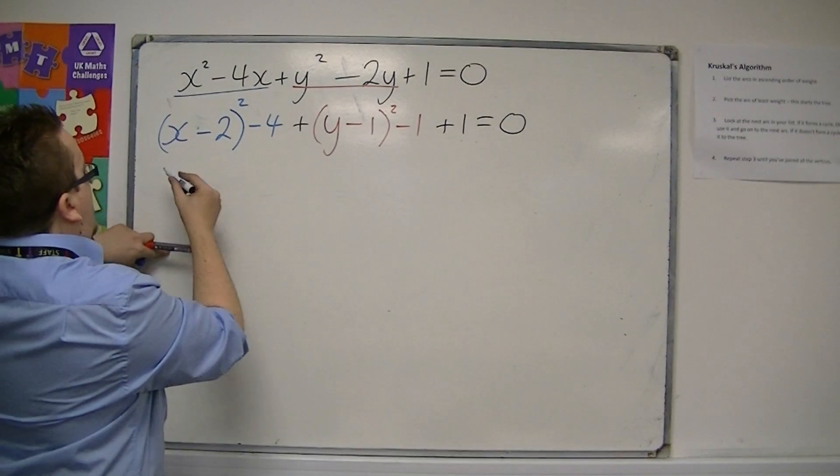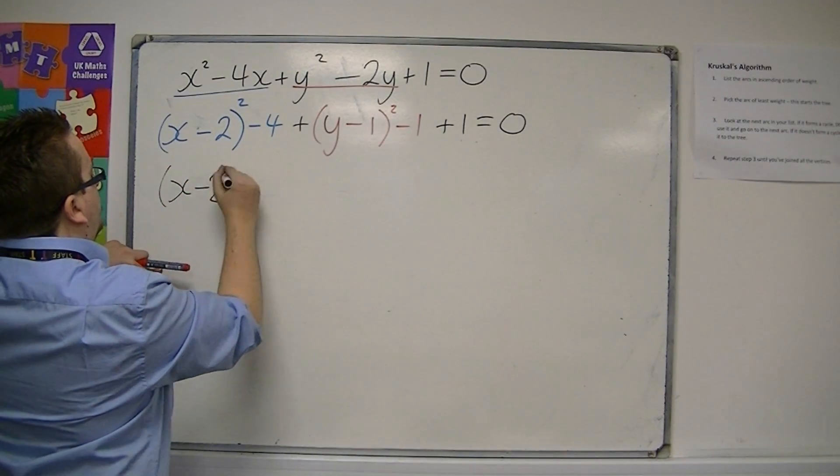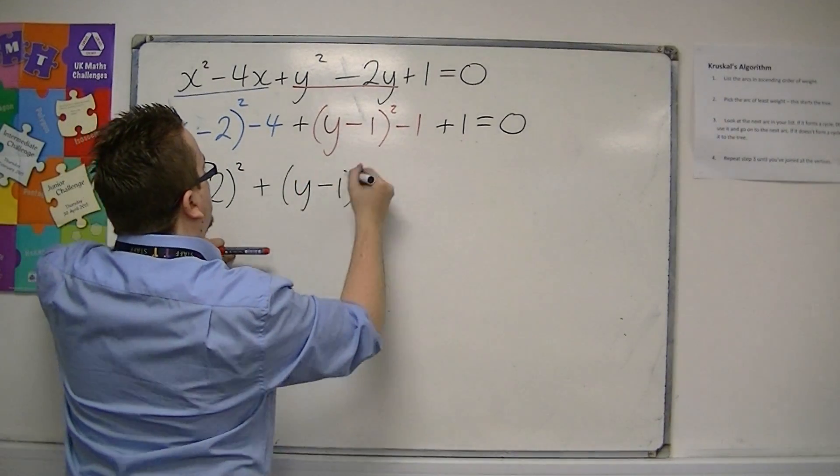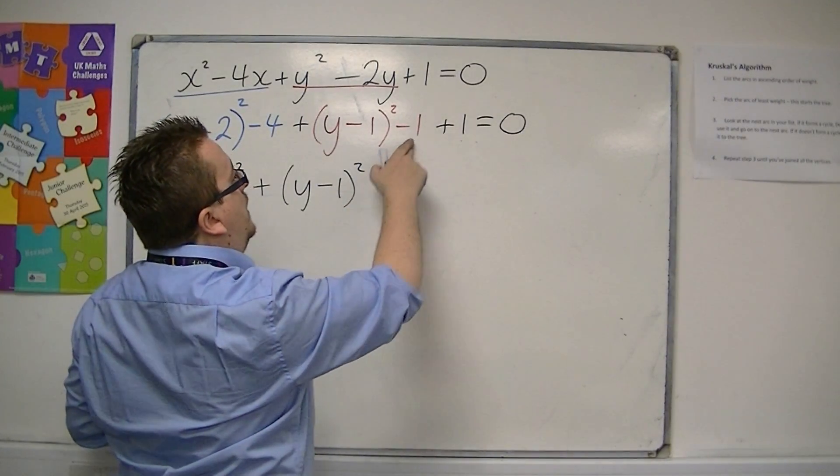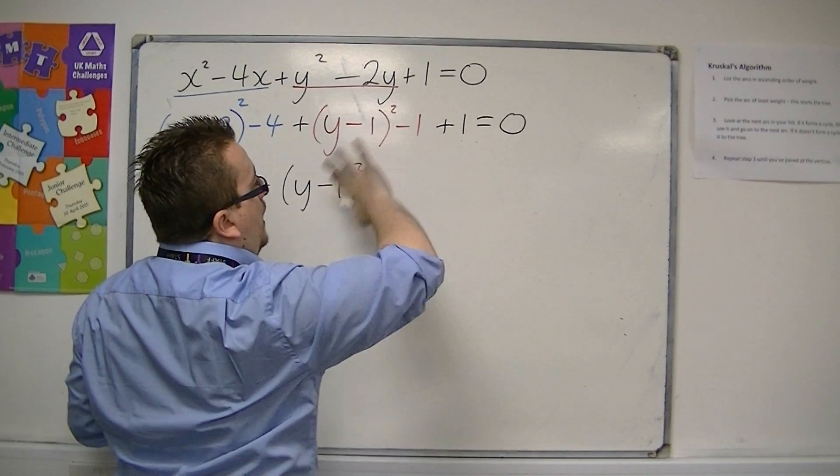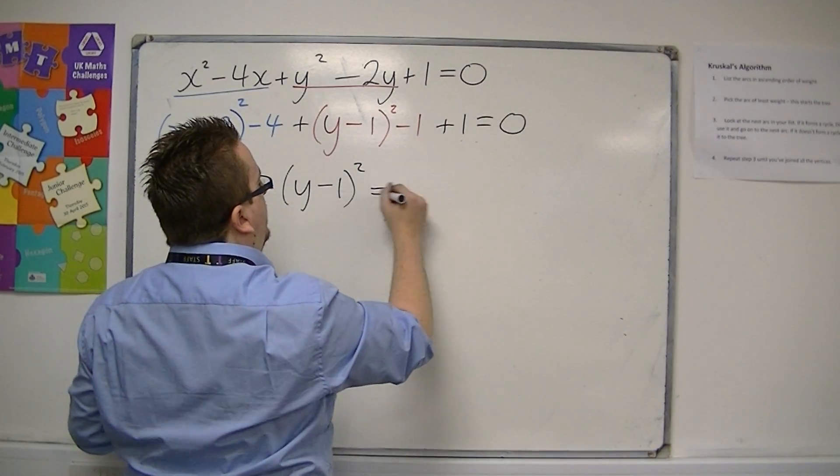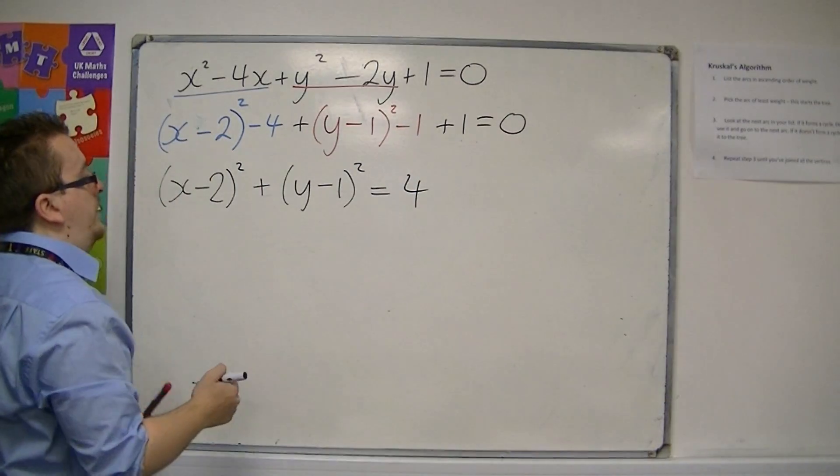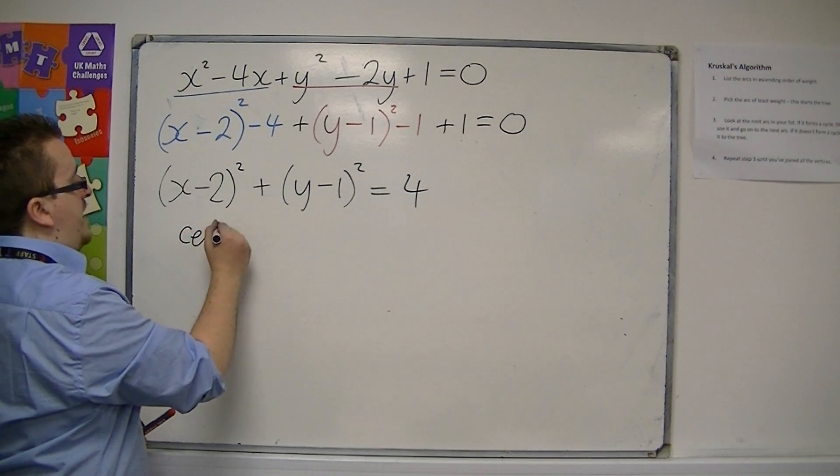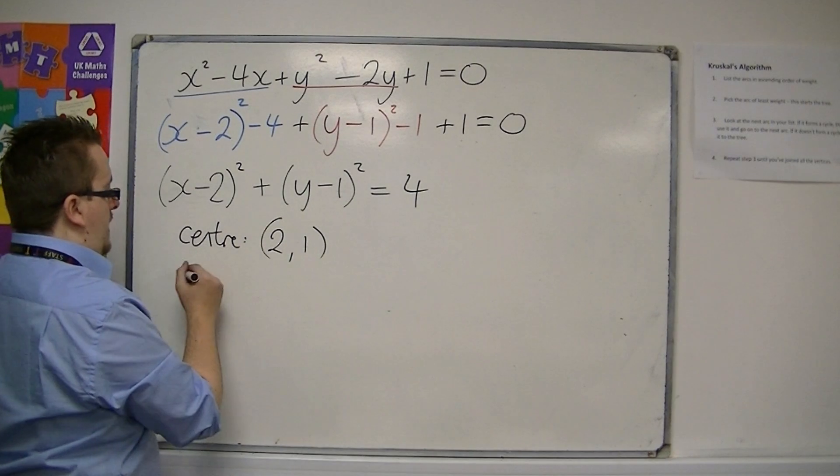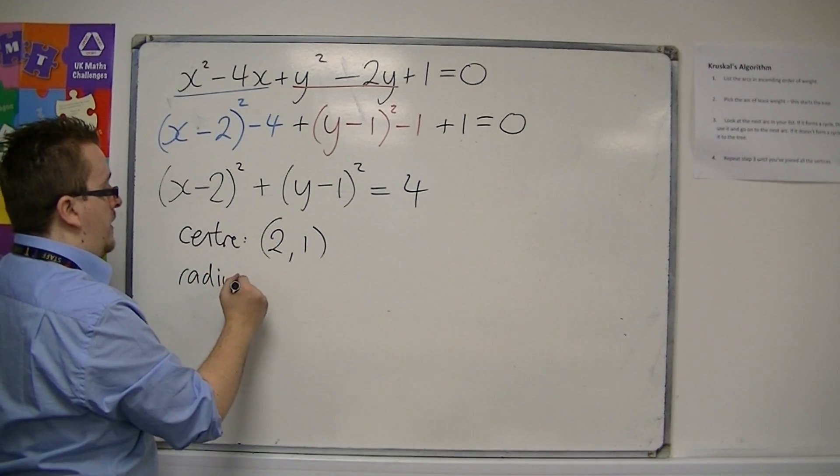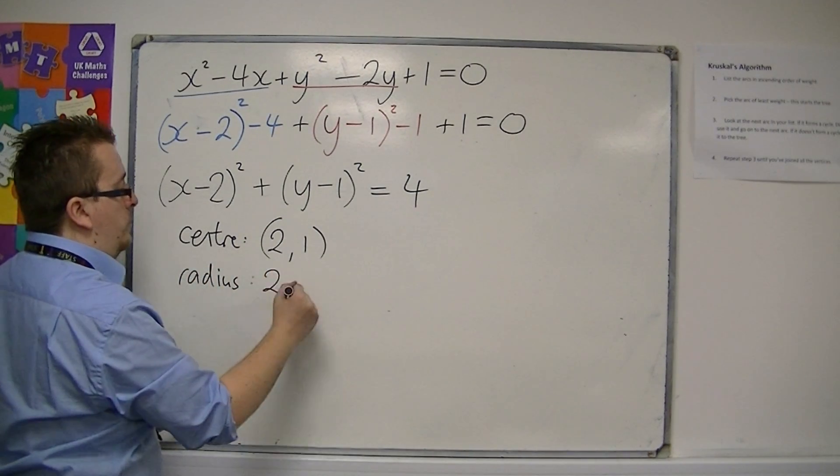So we're going to write the x's, and we're going to write the y's. The minus 4, take away 1 is minus 5, add 1 is minus 4, and so if you add 4 to both sides, we can bring the 4 over onto the right-hand side. So you can now identify that the centre is 2, 1, and the radius must be square root of 4, which is 2.